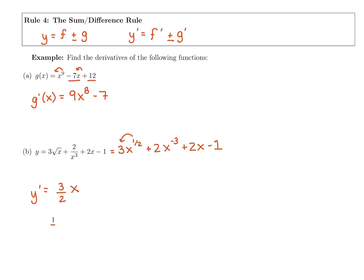We get x to the one half minus one. One half minus one is really subtracting two over two, so keeping the same denominator: one minus two is negative one half. So we bring down the power and use the new power. For the next term, two times negative three gives us negative six, and negative three minus one makes it more negative, giving us negative four.